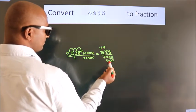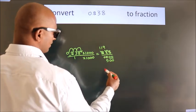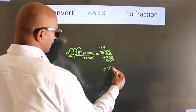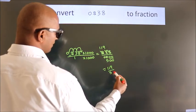Further cannot be simplified. So our fraction is 119 by 500.